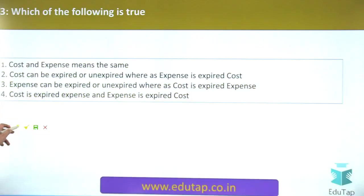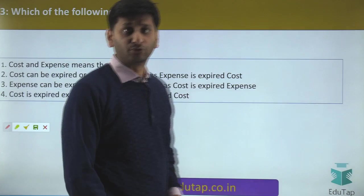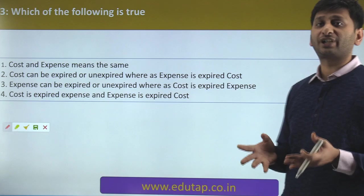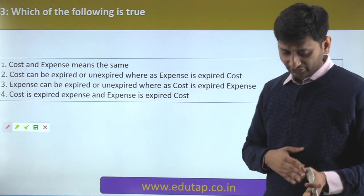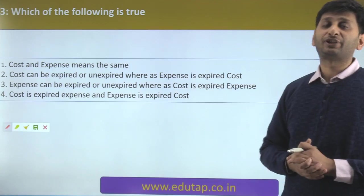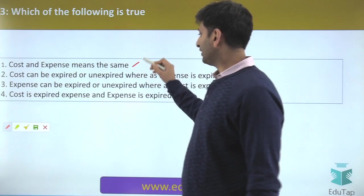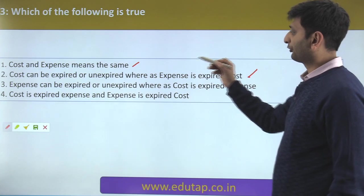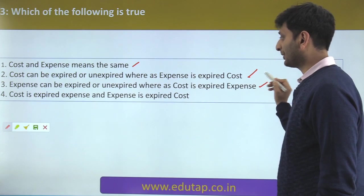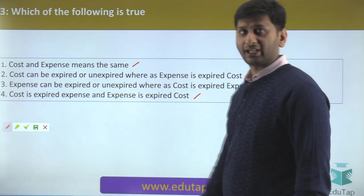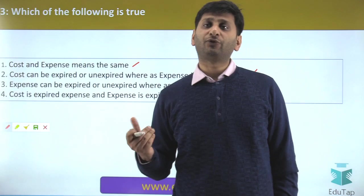The next question tests you on the concept of cost and expense. Which of the following is true? The options are: cost and expense mean the same; cost can be expired or unexpired whereas expenses are expired cost; expense is expired expense; or expense is expired cost. I can understand the confusion, but once I explain the concept of cost and expense, you will be able to answer this easily.